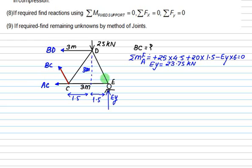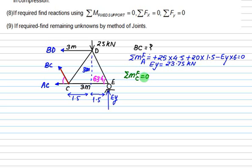The dimensions are 3 and 1.5, so the angle is tan inverse of 3 divided by 1.5, which equals 63.43°. This angle is the same for the inclined member. Now identify the point through which two unknowns are passing. Point C is the point through which two unknowns pass. So we take the moment equation about point C, setting the sum of moments equal to zero. The moment of BD about point C is anticlockwise.